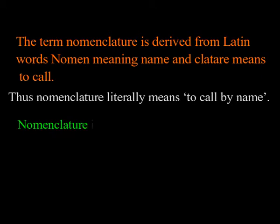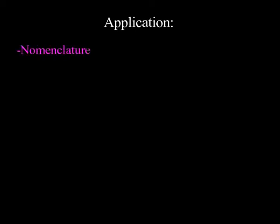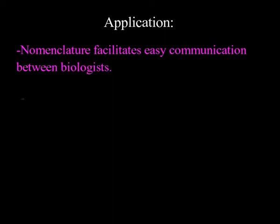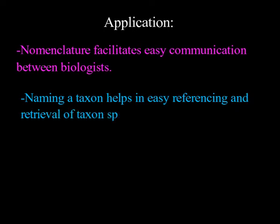Nomenclature is defined as the application of correct scientific names to all levels of taxa. It is used to facilitate easy communication between biologists. Naming a taxon helps in easy referencing and retrieval of taxon-specific information.